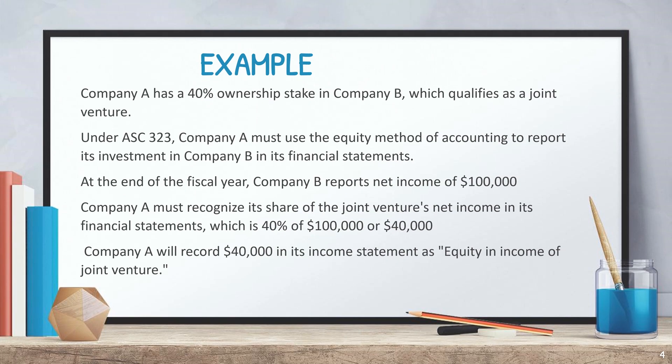Let's look at an example to see how the equity method of accounting works. Let's say that Company A has a 40% ownership stake in Company B, which qualifies as a joint venture. Under ASC 323, Company A must use the equity method of accounting to report its investment in Company B in its financial statements.